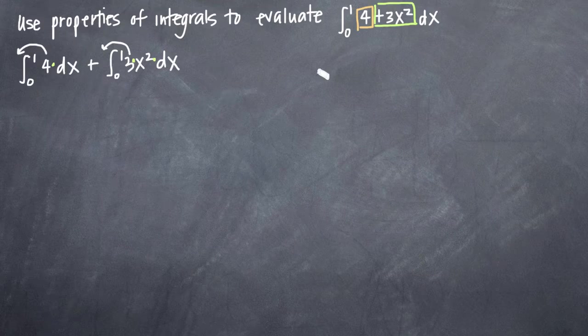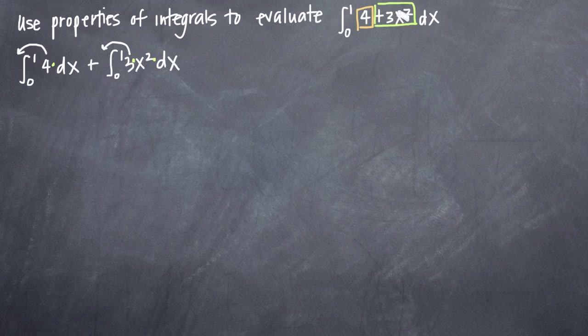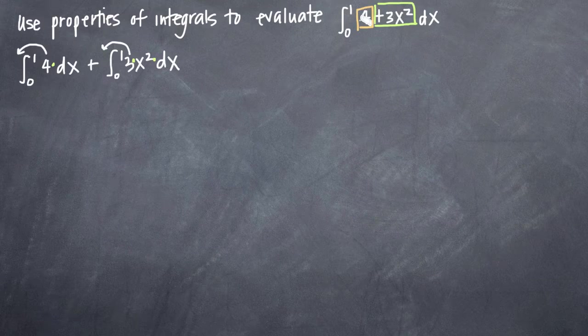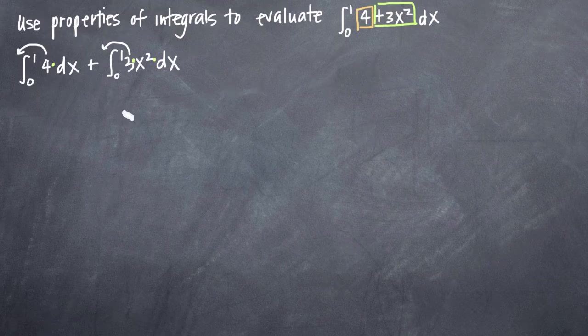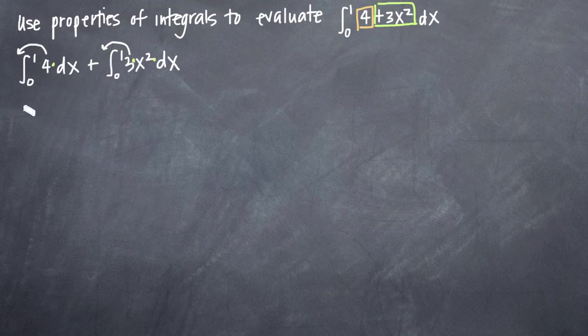That's to be distinguished from what we had in our first step here. We have 4 plus 3x squared. In this form, we can't pull a 4 out in front or pull a 3 out in front because these two terms are added together. Only when everything is multiplied together can we pull out the constant coefficient.